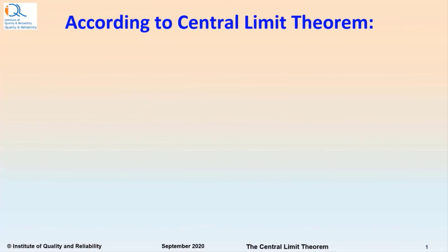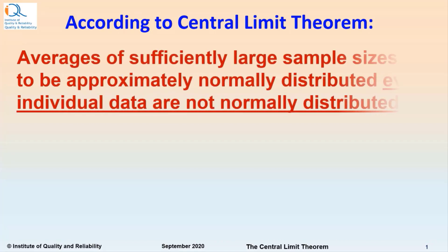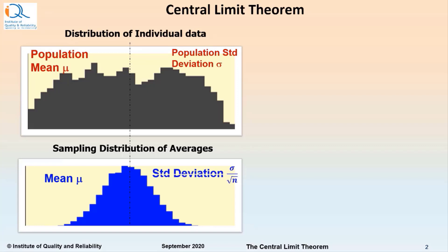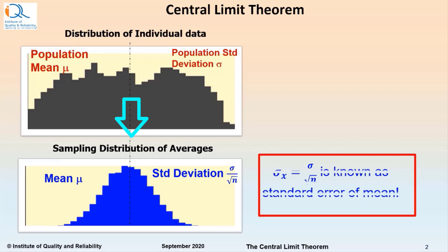In our video on Central Limit Theorem, we explained that according to the Central Limit Theorem, averages of sufficiently large sample sizes tend to be approximately normally distributed even if individual data are not normally distributed. It also follows from Central Limit Theorem that if the population mean is mu and standard deviation is sigma, then the sampling distribution of averages will have mean mu and standard deviation sigma upon square root n. And sigma by square root n is known as standard error of mean.